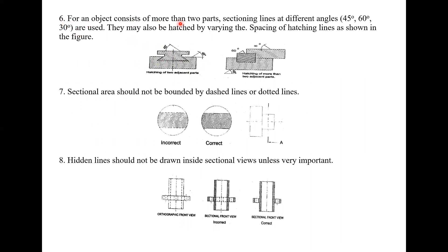For an object consisting of more than two parts, sectioning lines are drawn at different angles — 45, 60, and 30 degrees are used. If we look at an object with more than two adjacent parts, we use opposite directions combined with different angles to distinguish each component.